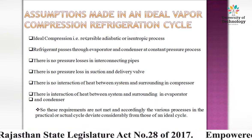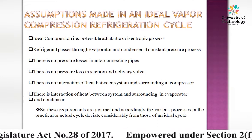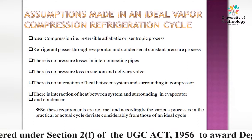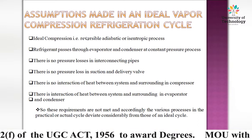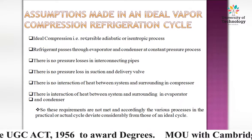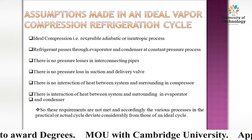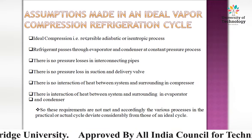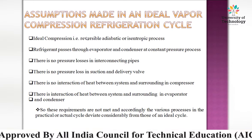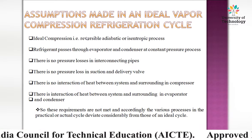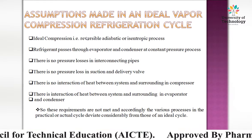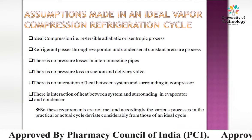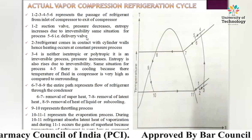Heat interaction between the system and surroundings occurs only in the evaporator and condenser. These requirements are not met in practice, and accordingly the various processes in the actual cycle deviate considerably from those of the ideal cycle. We now discuss the actual vapor compression refrigeration cycle.